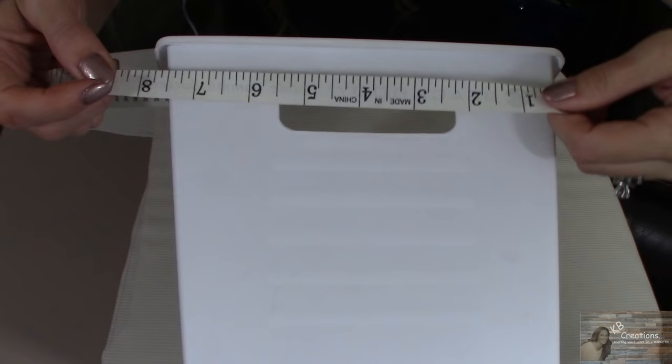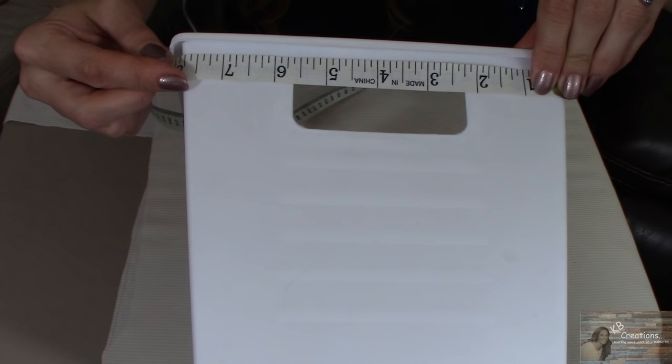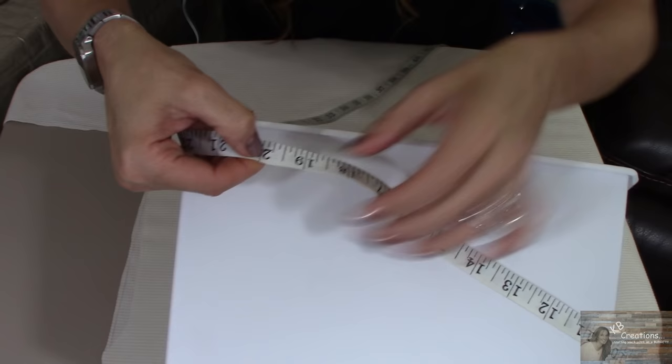Taking my fabric measuring tape, I'm going to take it, put it at the top of my bin and run it along the outside of two sides of this bin. And it measures out at about 19 inches. I'm going to add an inch onto that 19 and make it 20.